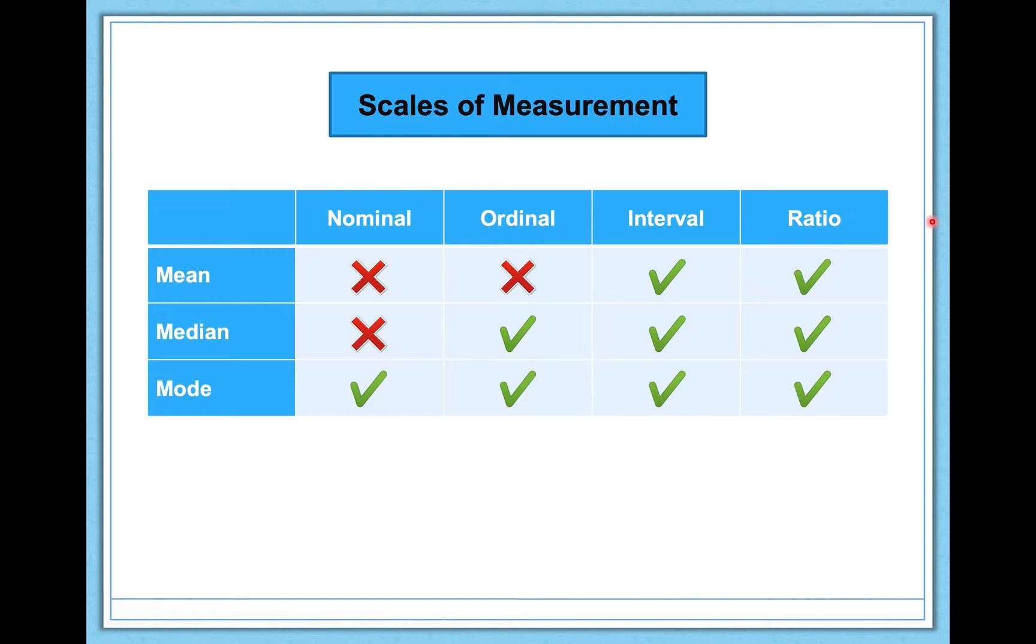I want to quickly note why this matters. Scales of measurement are going to determine a lot of things that you can and cannot do with your data. For example, if we look at measures of central tendency—the mean, median, and mode that we talked about before—you'll see that the mode can be done on anything, you can do the median on interval, ratio, and ordinal data, but some of these are X'd out because they just can't be done on these certain scales of measurement. Think about this example: if we're looking at the median, we cannot compute a median for nominal data because the first step in calculating the median is ordering all the values in your data set, but nominal data has no order to it.